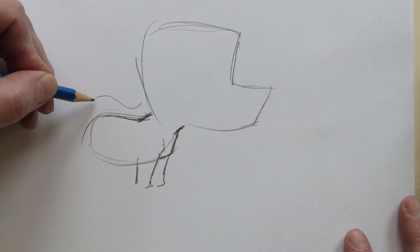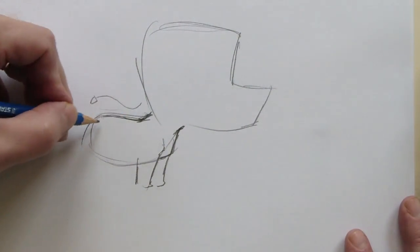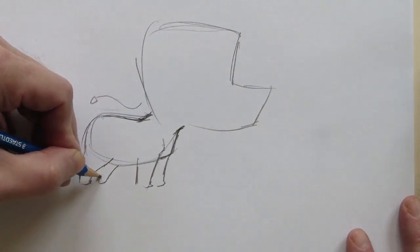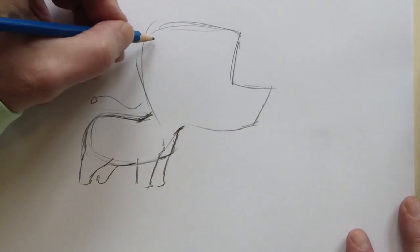Now you notice we have this little sort of arch going on here. That gives him a cute look. Bring this leg back here. We're simplifying the anatomy on a cartoon dog.